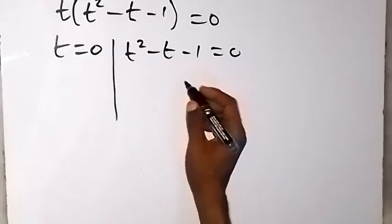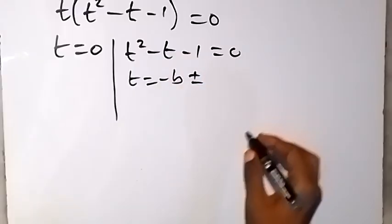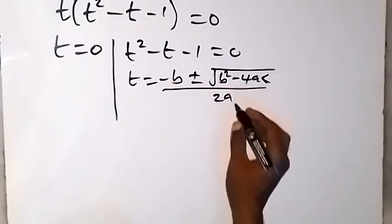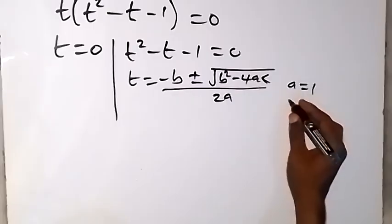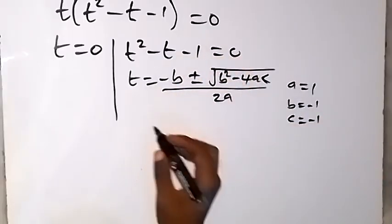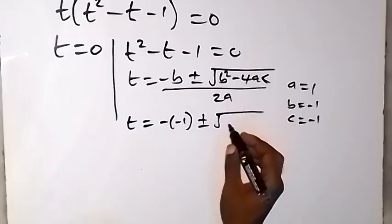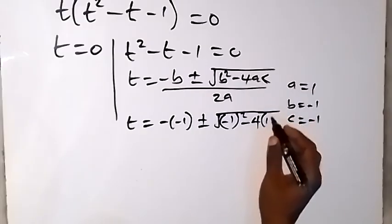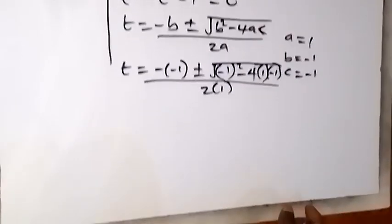Using the quadratic formula t equals negative b plus or minus square root of b² minus 4ac, all over 2a, we identify a equals 1, b equals negative 1, and c equals negative 1. Substituting: t equals negative (−1) plus or minus square root of (−1)² minus 4(1)(−1), all over 2(1).